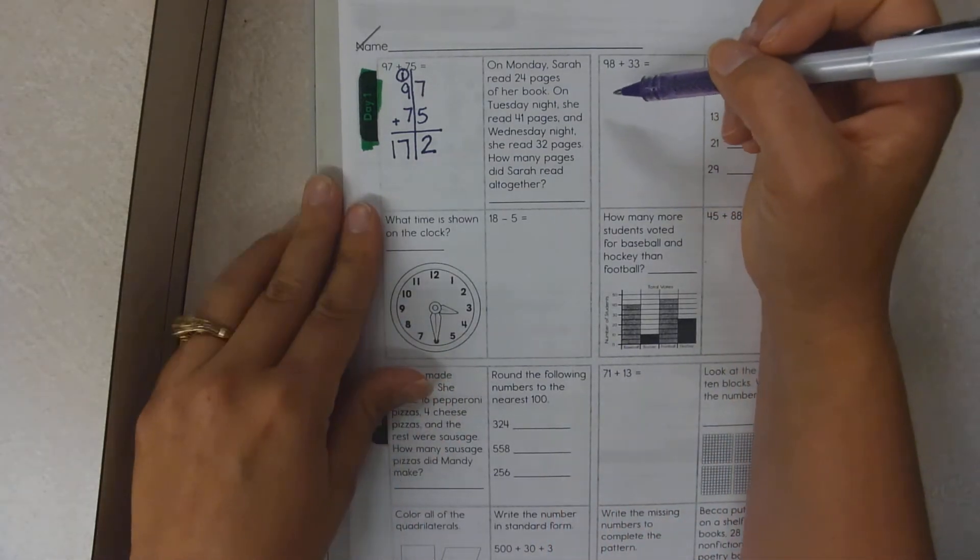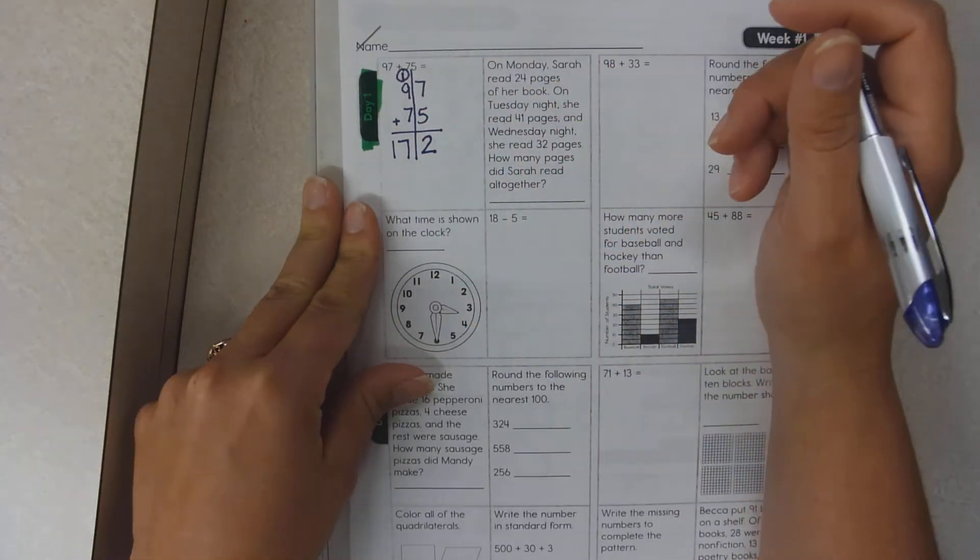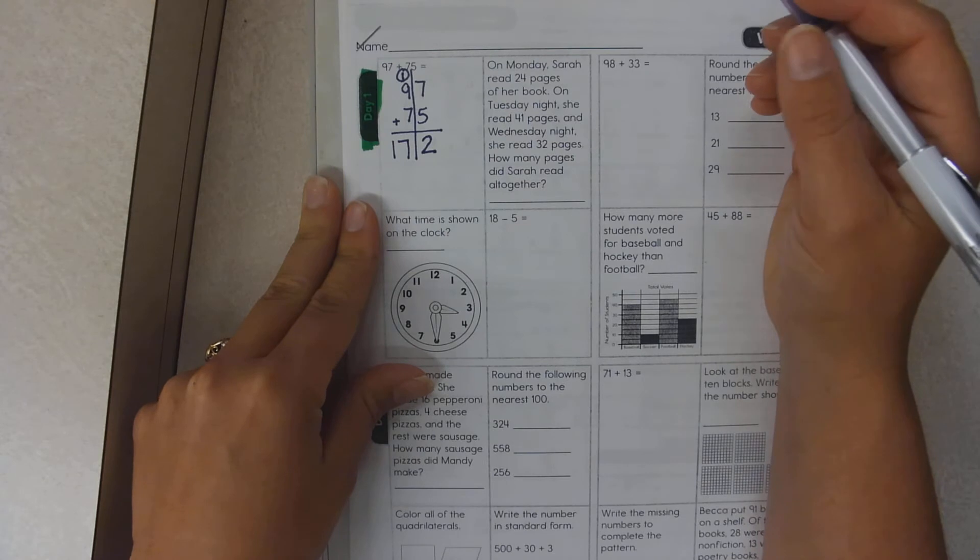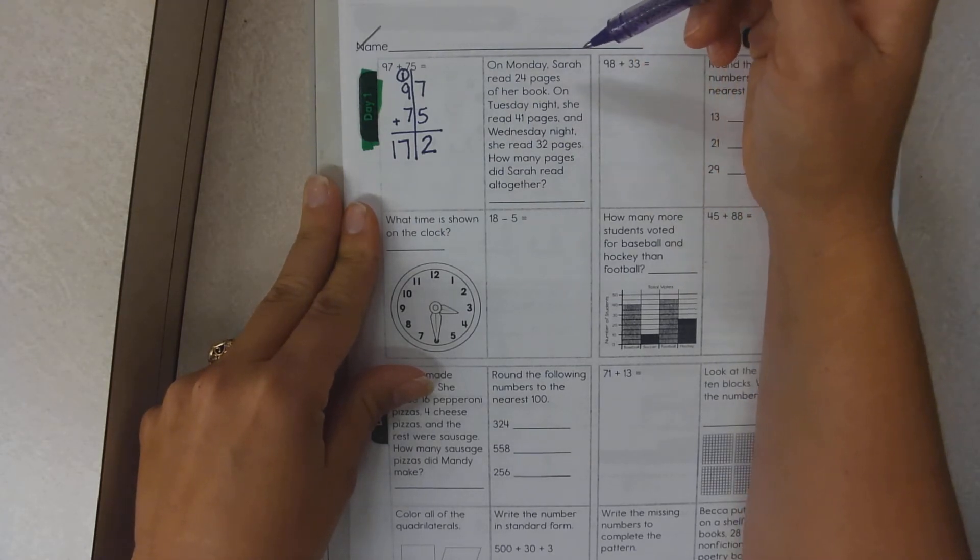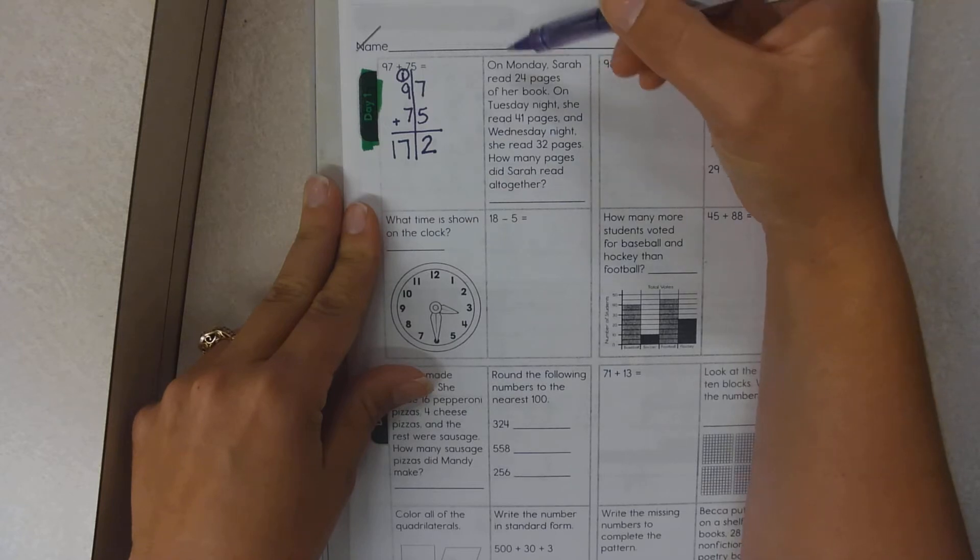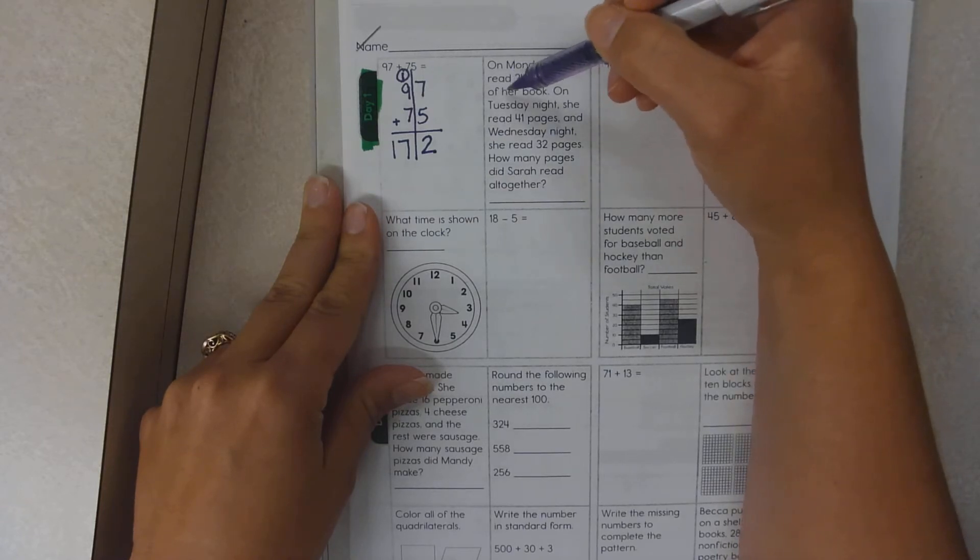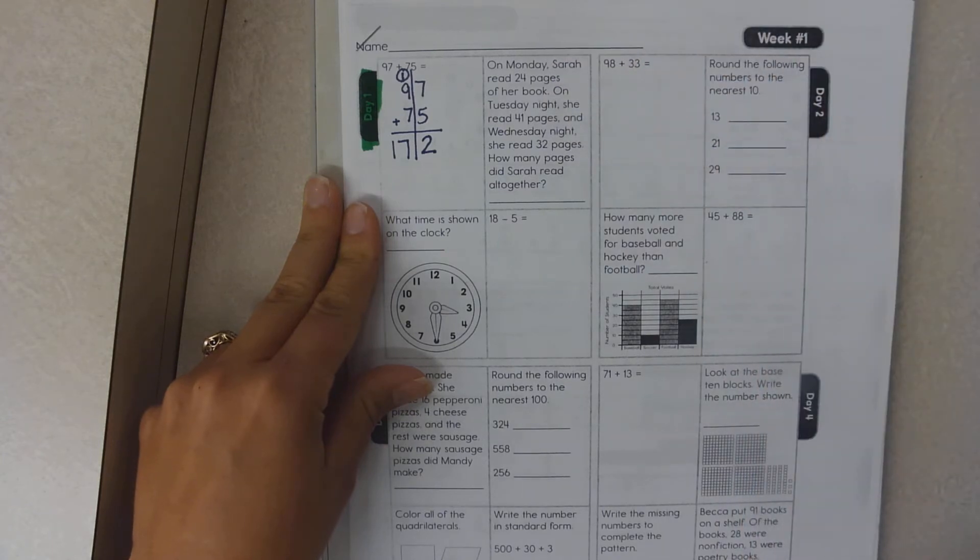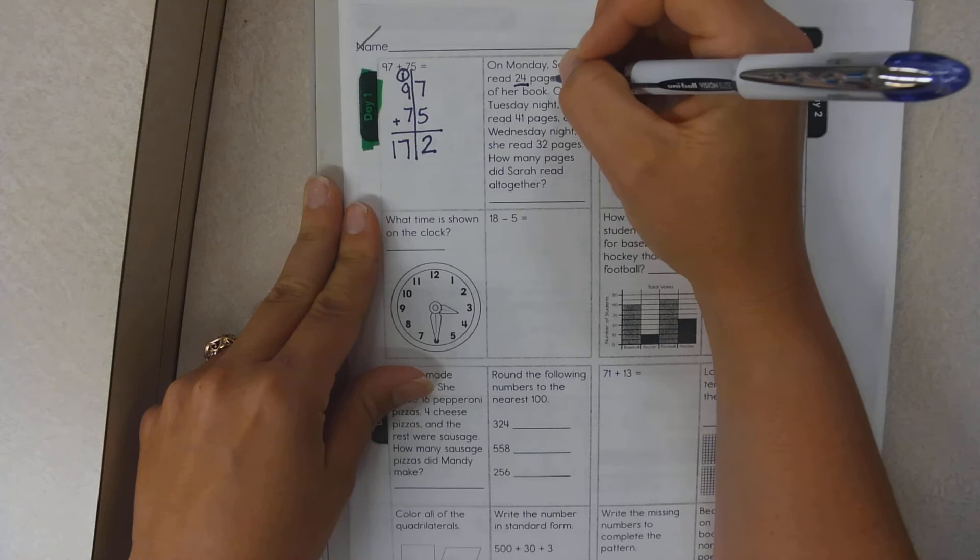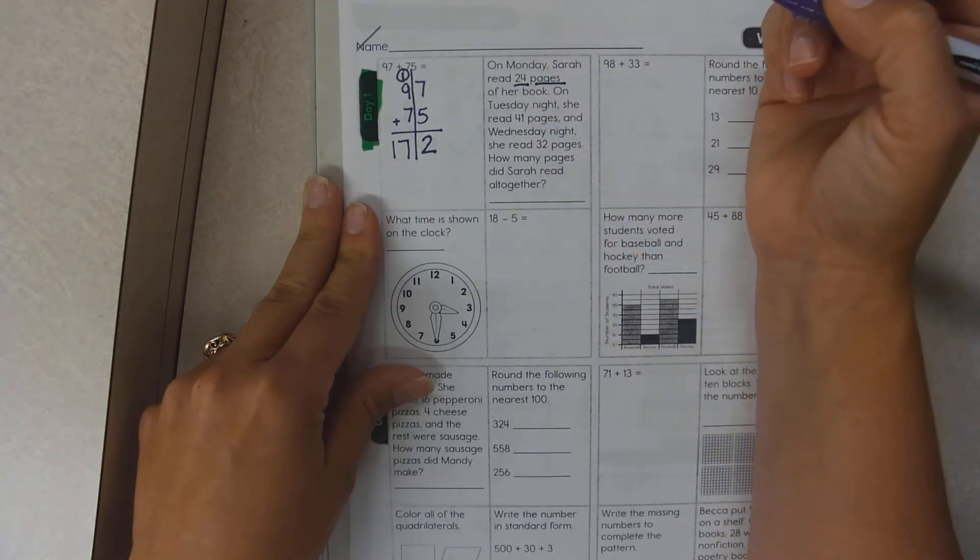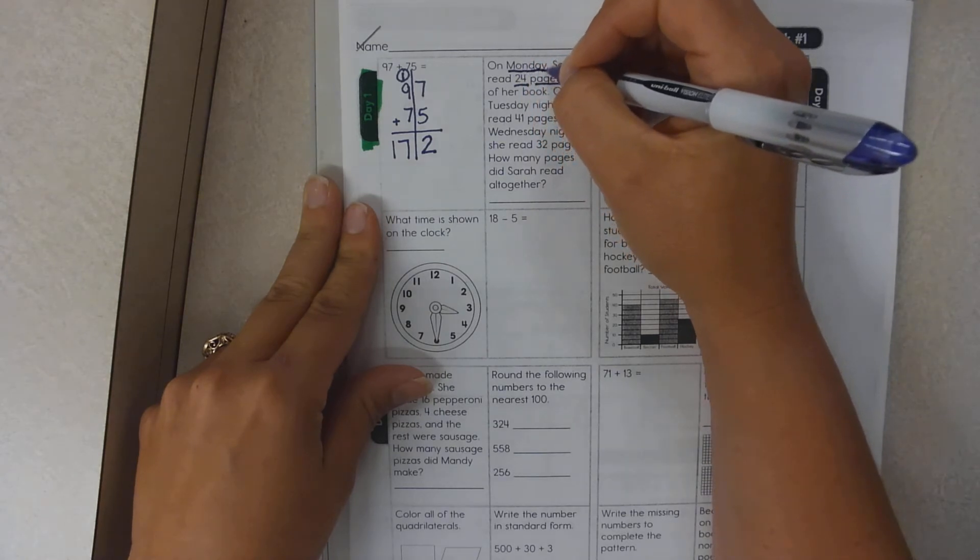I ask that you underline your pertinent details. When you get these huge problems, it's hard to tell what they are asking you to do. So as I read, I'm going to underline what I think is important. On Monday, Sarah read 24 pages of her book. So I know that 24 pages is going to be important. And I see a Tuesday down here, so I'm going to underline Monday.